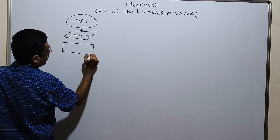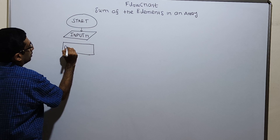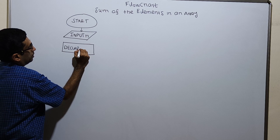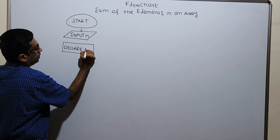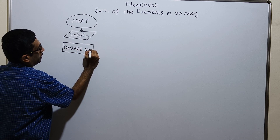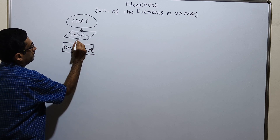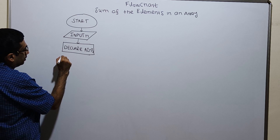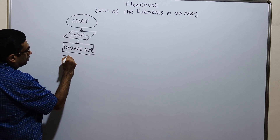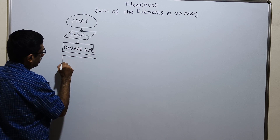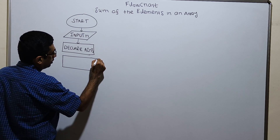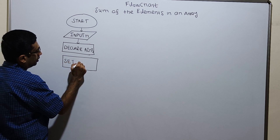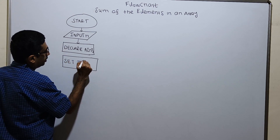I am declaring an array with the size n. Now I am placing a variable i, the loop variable, i equal to 0.